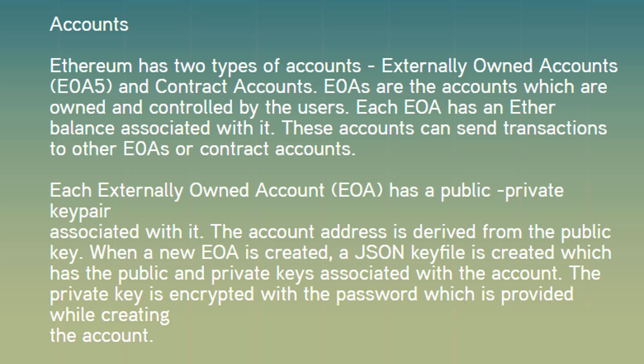Accounts. Ethereum has two types of accounts: externally owned accounts, or EOAs, and contract accounts. EOAs are the accounts which are owned and controlled by the users. Each EOA has an ether balance associated with it. These accounts can send transactions to other EOAs or contract accounts. Each externally owned account has a public-private key pair associated with it.